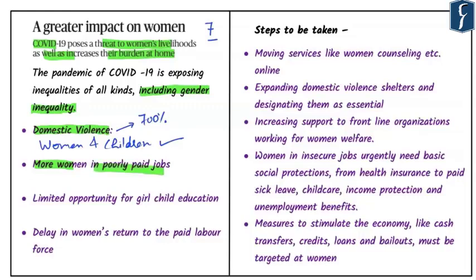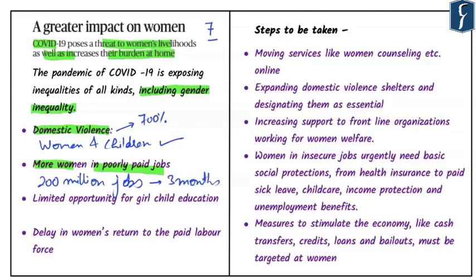A second important aspect is that more women are in poorly paid jobs — the so-called pink collar jobs. Women are disproportionately represented in poorly paid jobs and basically lack benefits as domestic workers, casual laborers, and street vendors. According to estimates from the International Labour Organization, nearly 200 million jobs will be lost in the next three months alone, predominantly from these sectors.